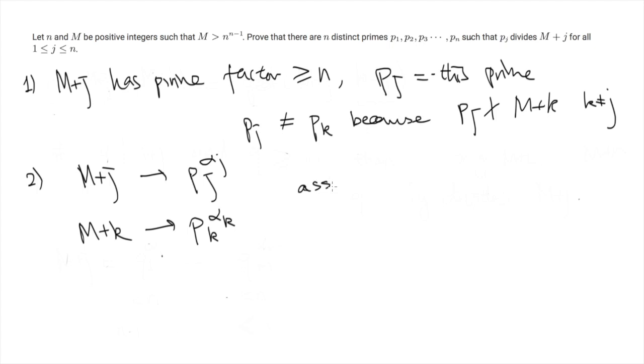And also the same. Let's assume we have another number M plus k gives the same Pk. So let's assume that Pj equals to Pk.